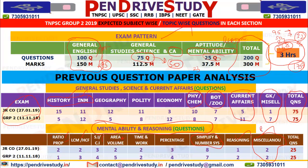Probability, Average, and Trigonometry are out-of-portion topics for TNPSC Group 2. These are outside the required syllabus, so you do not need to focus on them.